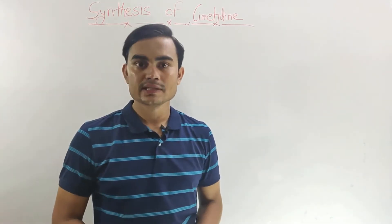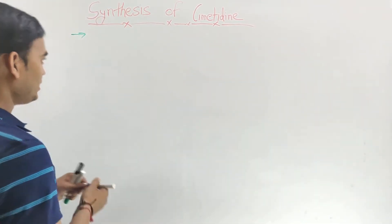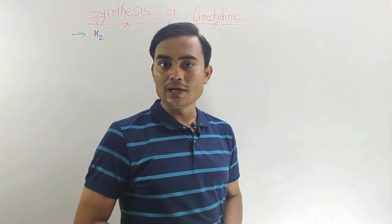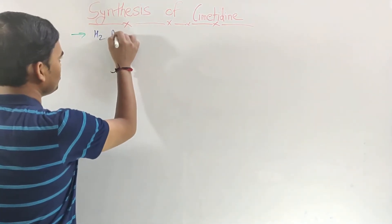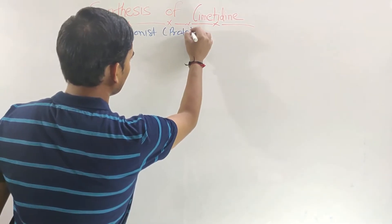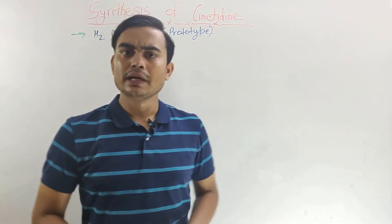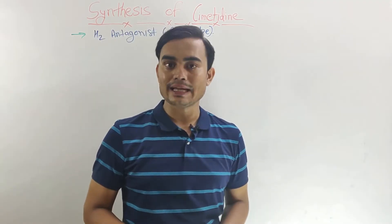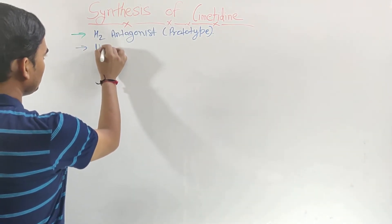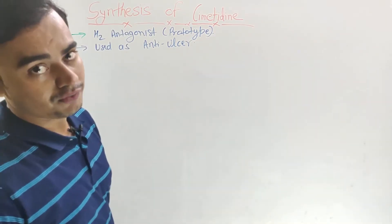Today we are going to discuss the synthesis of Cimetidine. Cimetidine is the H2 antagonist. It is the first H2 antagonist which was used, so it is also called as the prototype H2 antagonist. This is mainly used in the treatment of ulcers because it reduces HCl secretion, and it is used in ulcer and GERD. It is used as an anti-ulcer agent and inhibits the secretion of HCl.